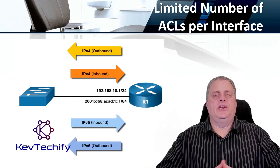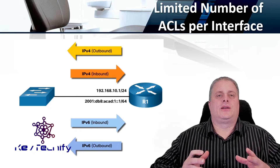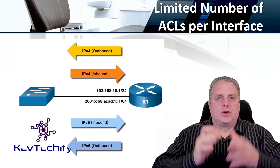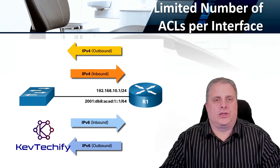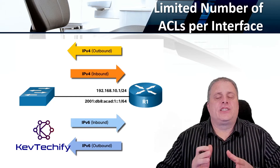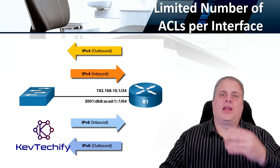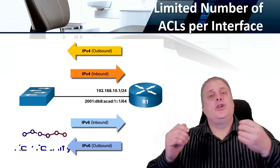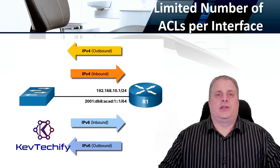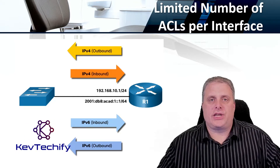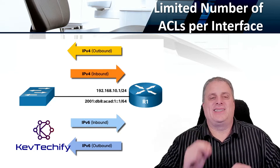There are a limited number of access control lists you can put on per interface. Each interface has a limit on access control lists. That limit happens to be four on a dual-stacked router. What we mean by dual-stacked is you're running IPv4 and you're running IPv6 on that router. Each interface, if you're running both in a dual-stacked environment, you can have up to four ACLs.